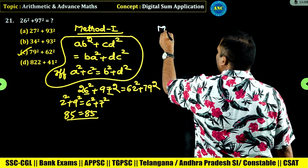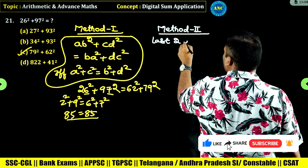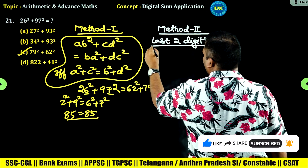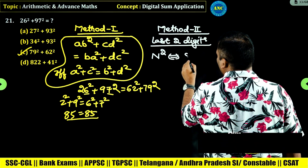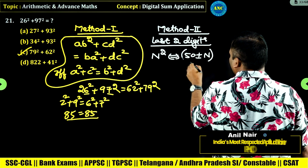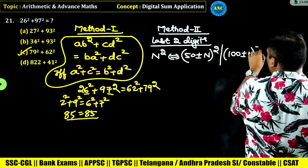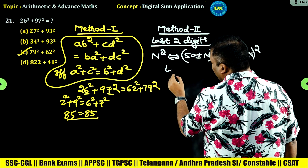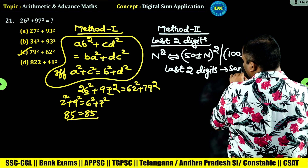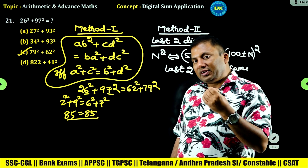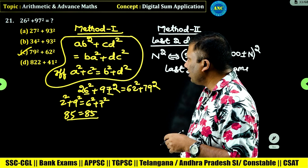In case you forget that concept, you can use the concept of last two digits. If you take any natural number N and square it, then (50 plus or minus N) whole square, and (100 plus or minus N) whole square will all have the same last two digits as N square.